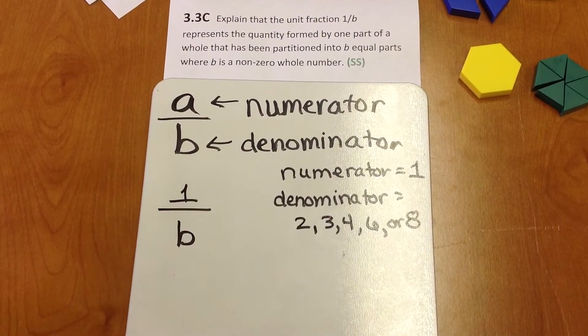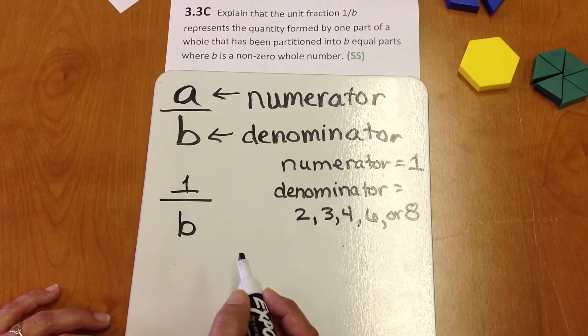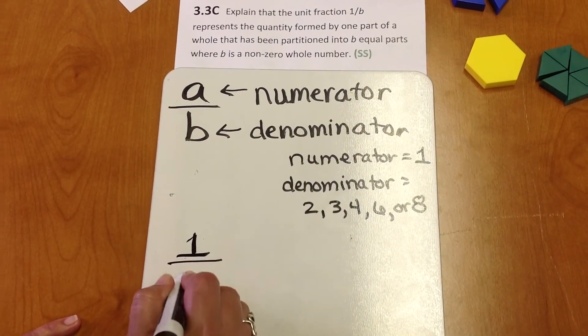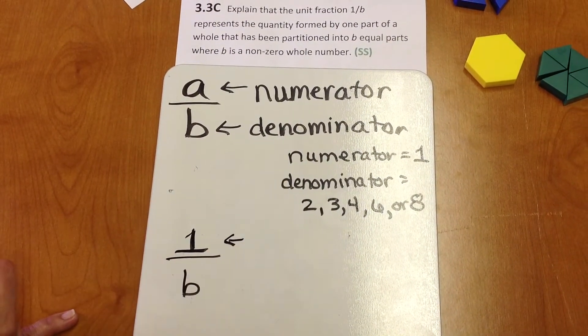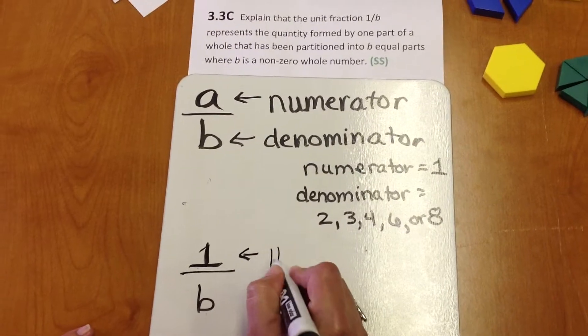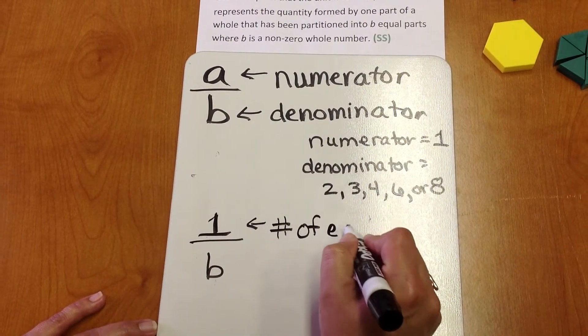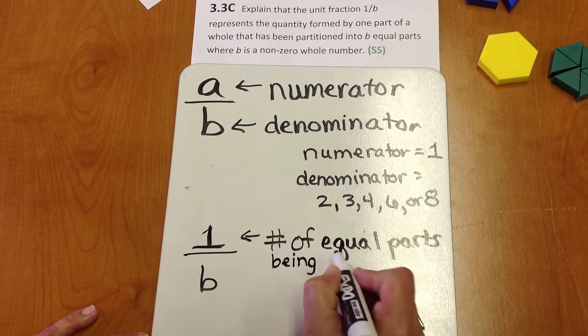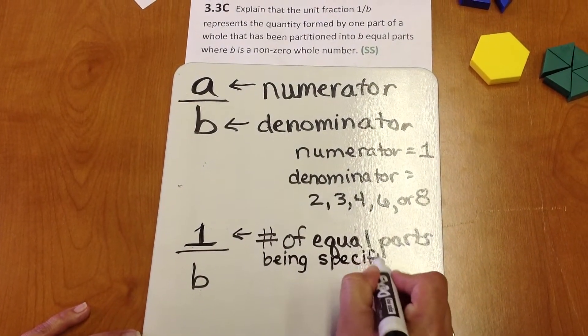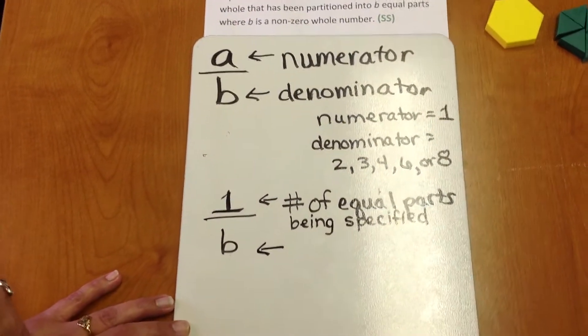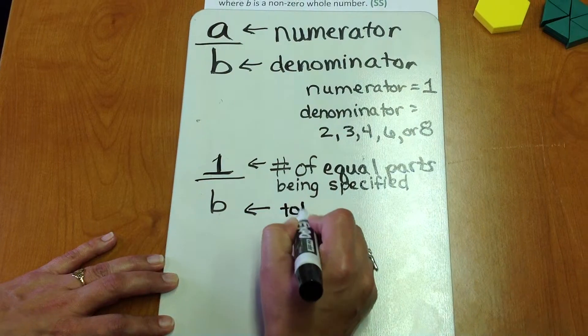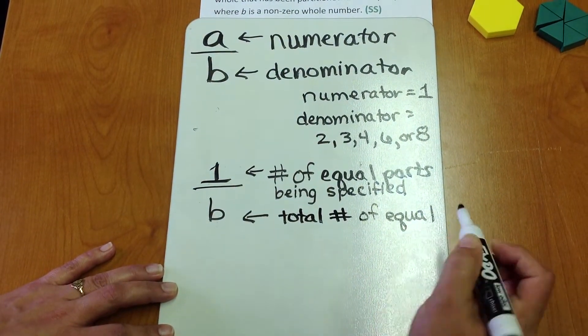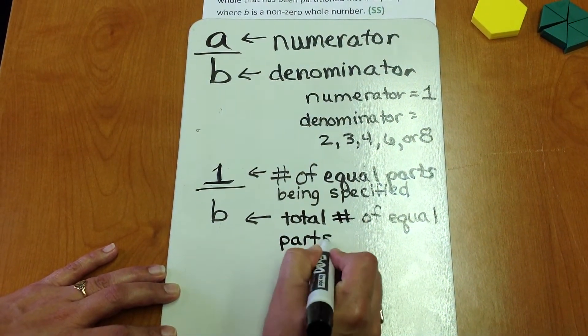So, let's talk about what a numerator means. A numerator indicates the number of equal parts being specified or considered. A denominator tells you the total number of equal parts in a whole.